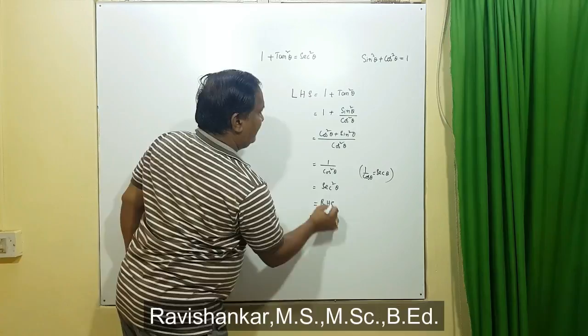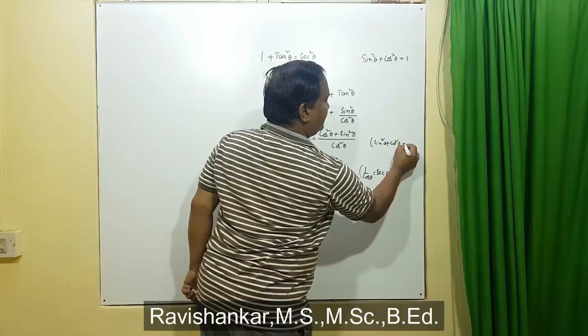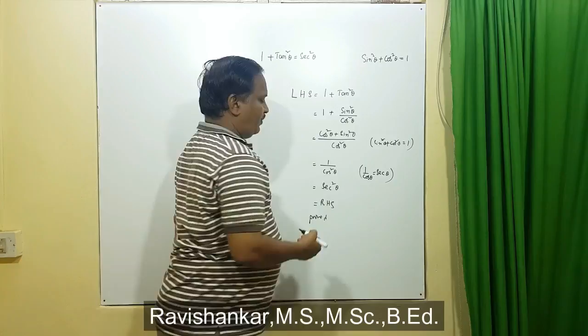So we proved left hand side is equal to right hand side. The reason we replaced the numerator with 1 is because sin square theta plus cos square theta is equal to 1 — using this, the numerator becomes 1. This is how the second identity is to be proved. I hope you understand. Thank you.